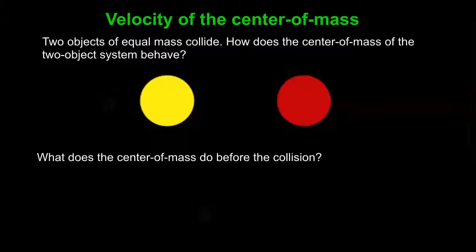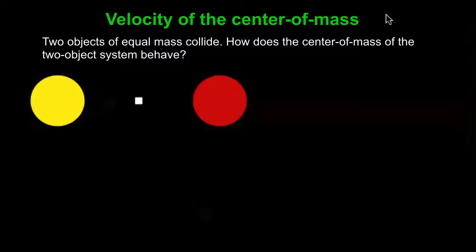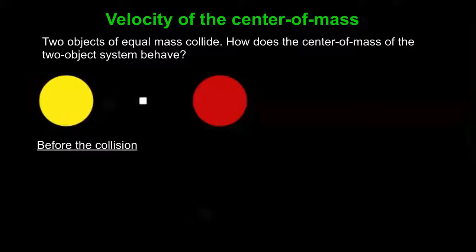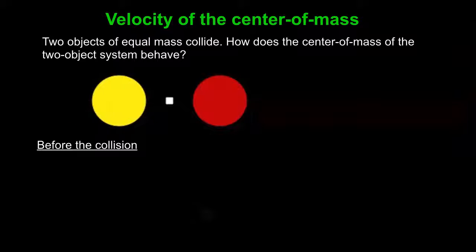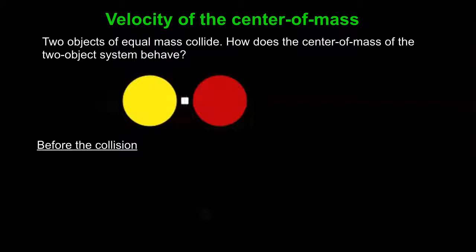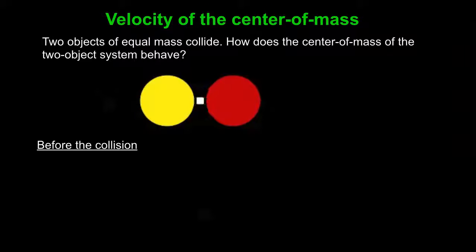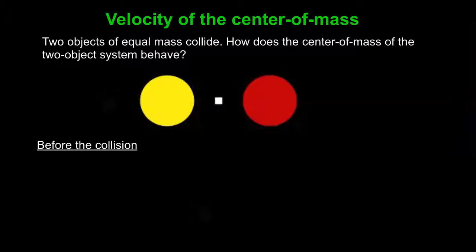What does the center of mass do before the collision? What about afterwards? Okay, so one thing to notice is that the center of mass here is marked by the white square, and before the collision it is going half the speed as the yellow object. And how does its motion change afterwards?